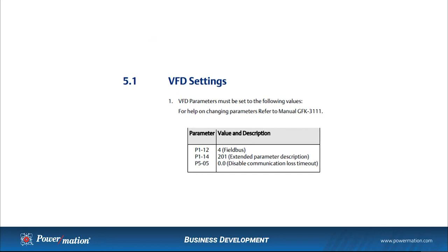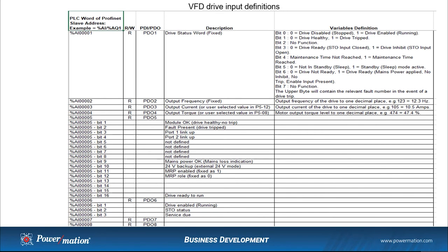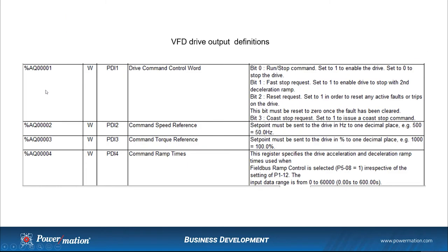The VFD parameters we'll show are the ones needed to set the drive up to communicate over the fieldbus, but there's also software within Machine Edition where you can connect to this drive and go through a full list of parameters. This is just the definition file for the VFD drive — there are eight words of inputs coming in on analog inputs one through eight, bit variable definitions for status and control, and a handful of output words for drive command signals as well as speed reference, torque reference, and ramp times.